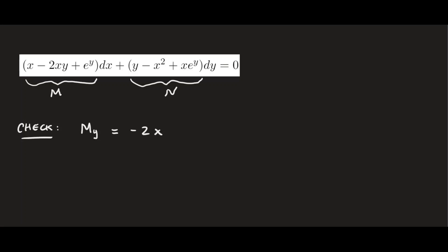Differentiating e^y with respect to y just gives e^y. So ∂M/∂y = -2x + e^y. Now for ∂N/∂x: the derivative of y is zero; the derivative of negative x squared is negative 2x; and for x·e^y, y is a constant so we get plus e^y. So ∂N/∂x = -2x + e^y, which is exactly the same. Therefore, this equation is exact.